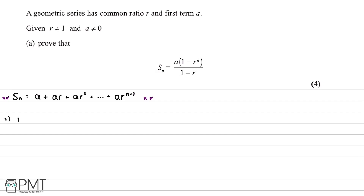Multiplying both sides by r gives us r times Sn on the left. On the right, each term is multiplied by r: a becomes ar, ar becomes ar squared, ar squared becomes ar cubed, and so on, up to ar to the power of n instead of n minus 1.